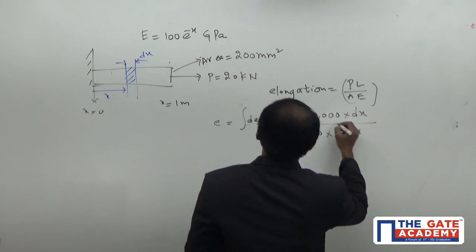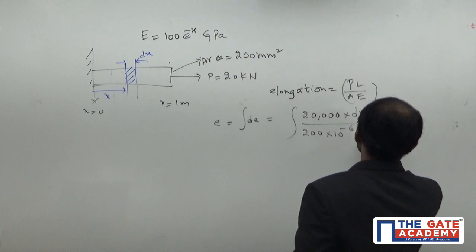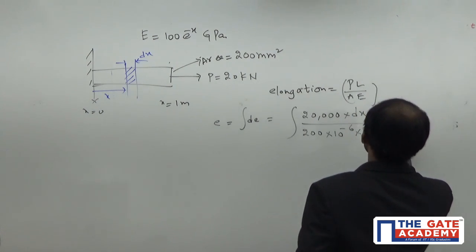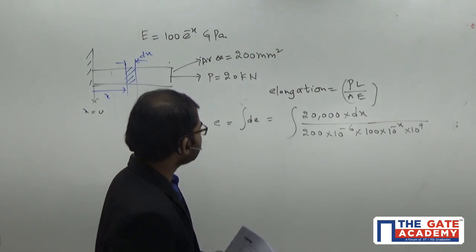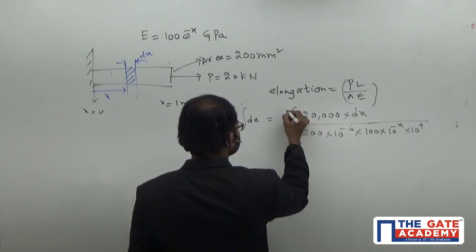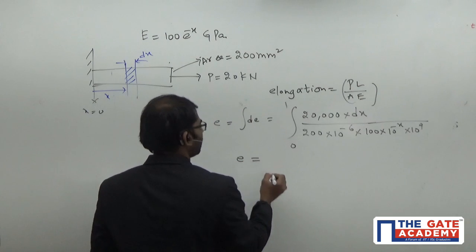Area is 200 times 10 to the power of minus 6 meter square into Young's modulus. It is given as 100 into 10 to the power of minus x gigapascal, so 10 to the power of 9 must be there. You have to integrate from x equals 0 to x equals 1, so you're going to get the total elongation.